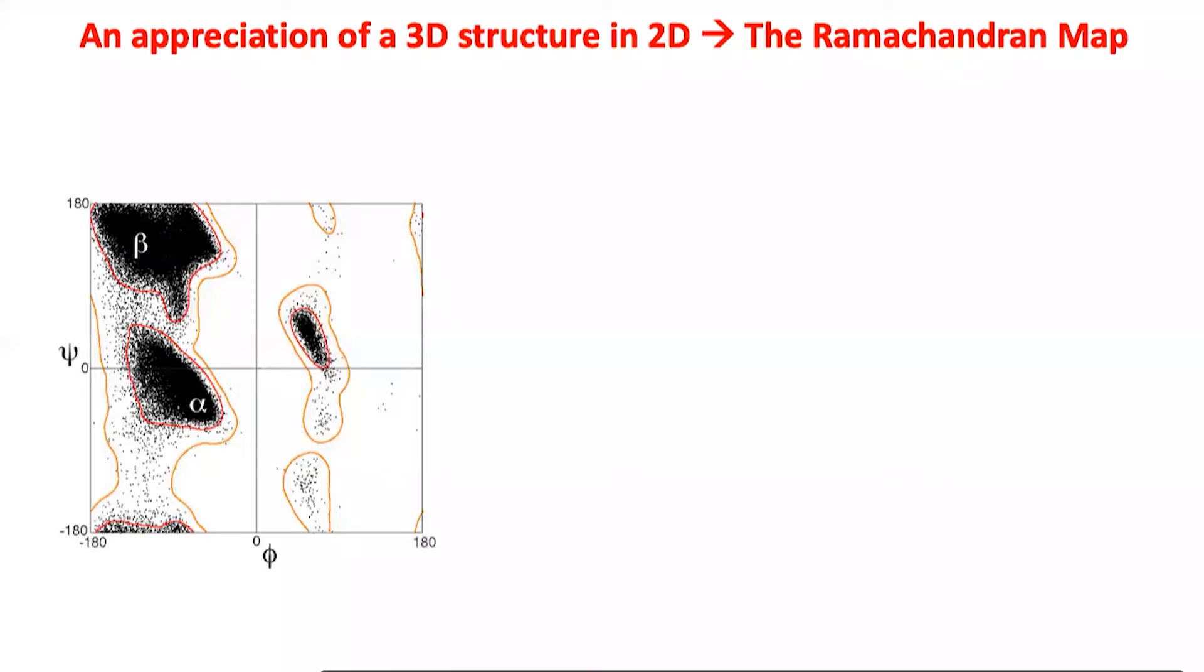He was particularly interested in the protein collagen which he was working with, but generically he and many others were looking for the basic rules by which you could predict the folded state of a protein from just the linear sequence of amino acids. So what Ramachandran did is he made models.